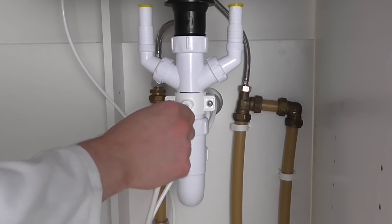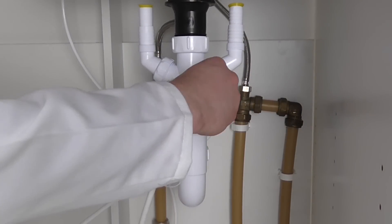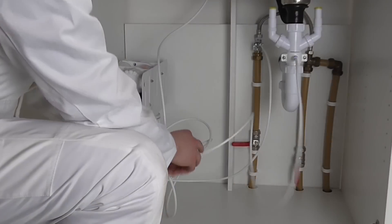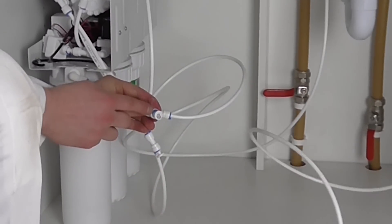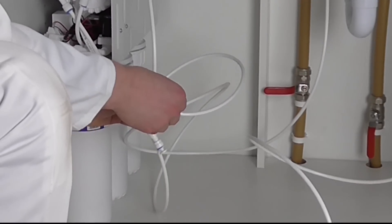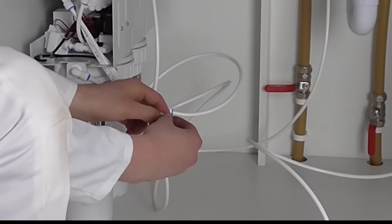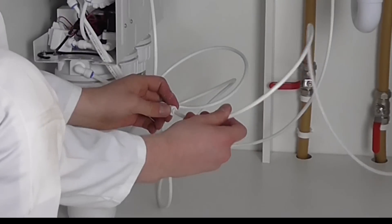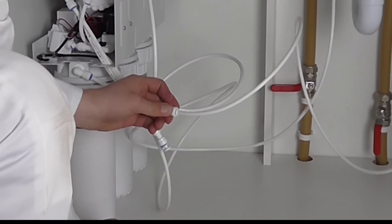Connect a length of tubing to the waste clamp and secure with a blue clip. Remove the cap and connect the tubing from the waste clamp. Secure with a blue clip.